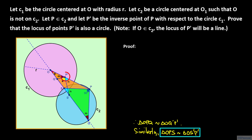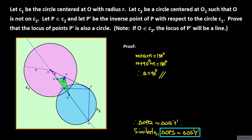Now take a look at the point P prime. We have three angles whose measures are M, A, and N respectively, and these three angles form a straight angle. Therefore, M plus A plus N equals 180 degrees. Now take a look at triangle PQS. The measures of its angles should add up to 180 degrees as well, so M plus 90 degrees plus N equals 180 degrees. Therefore, A must be 90 degrees. Therefore, triangle Q prime P prime S prime is a right triangle, and its hypotenuse Q prime S prime is a diameter of the circle that is the locus of the inverse points of the points on C sub 2.